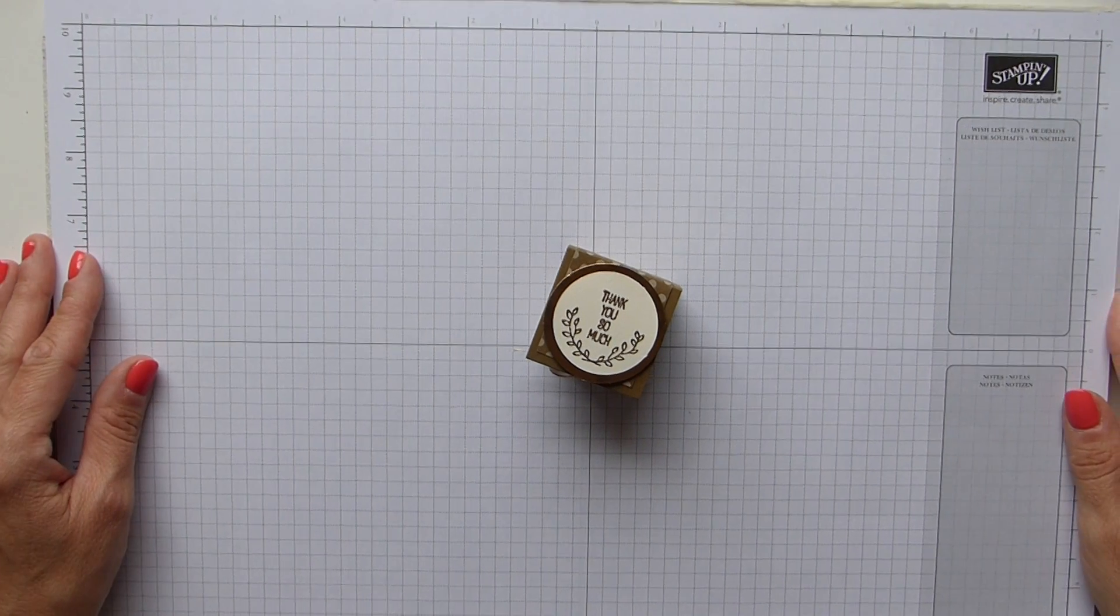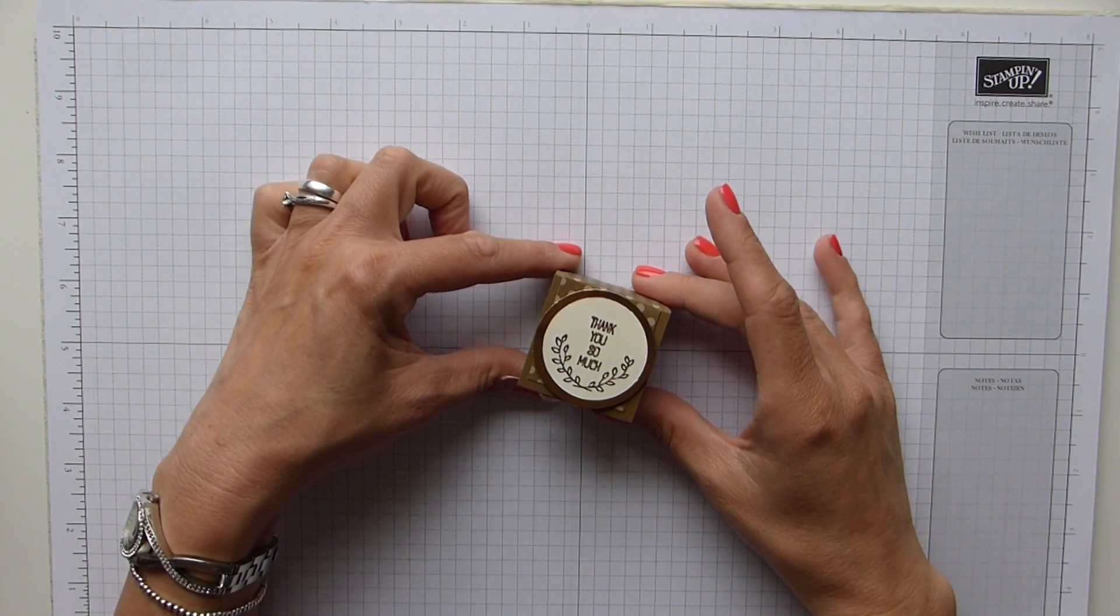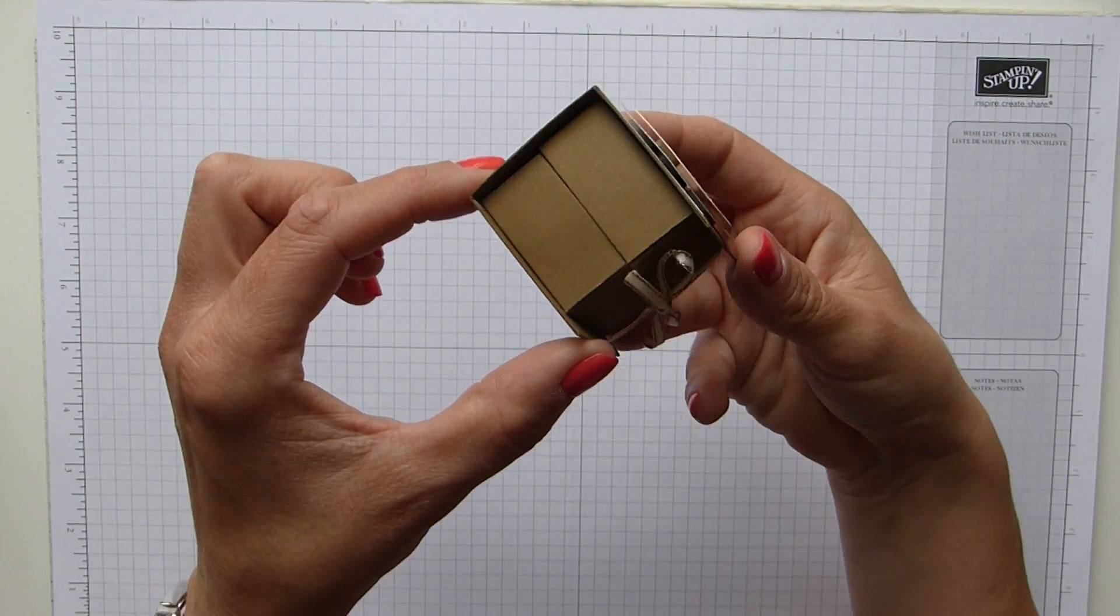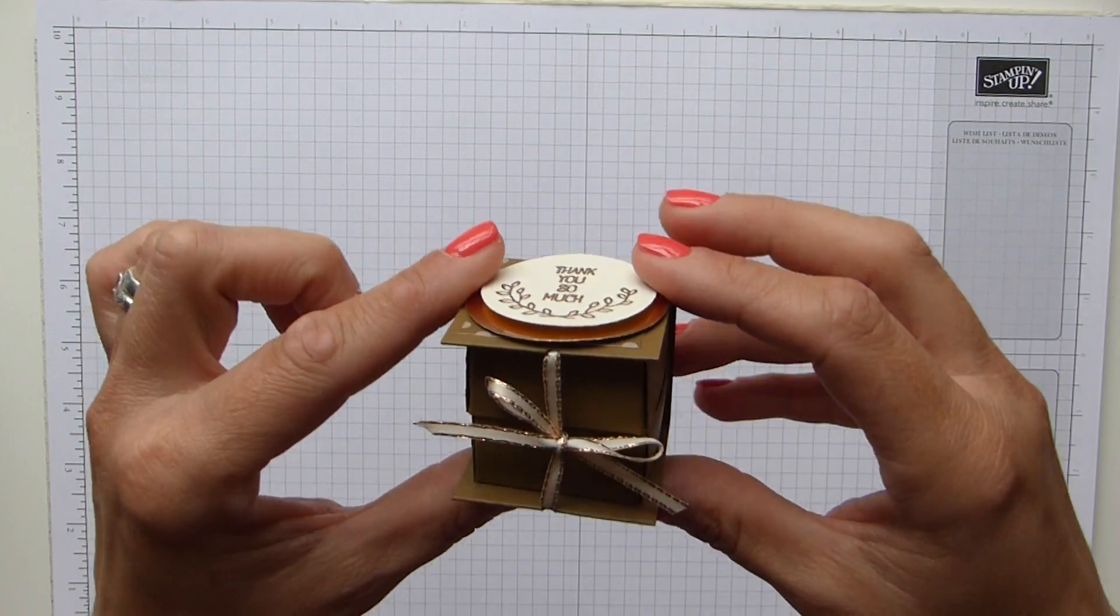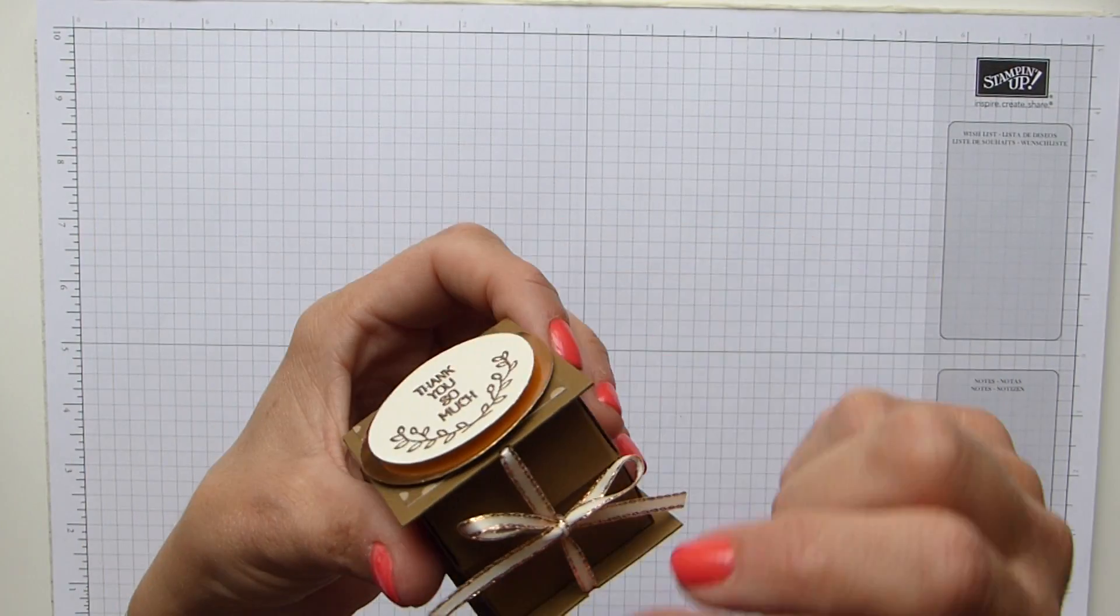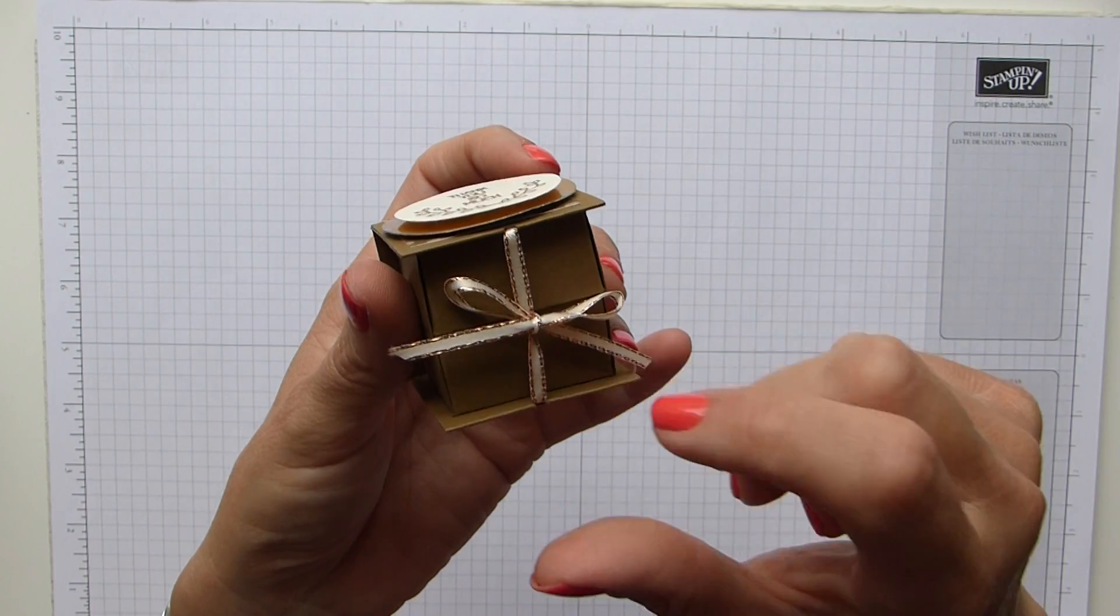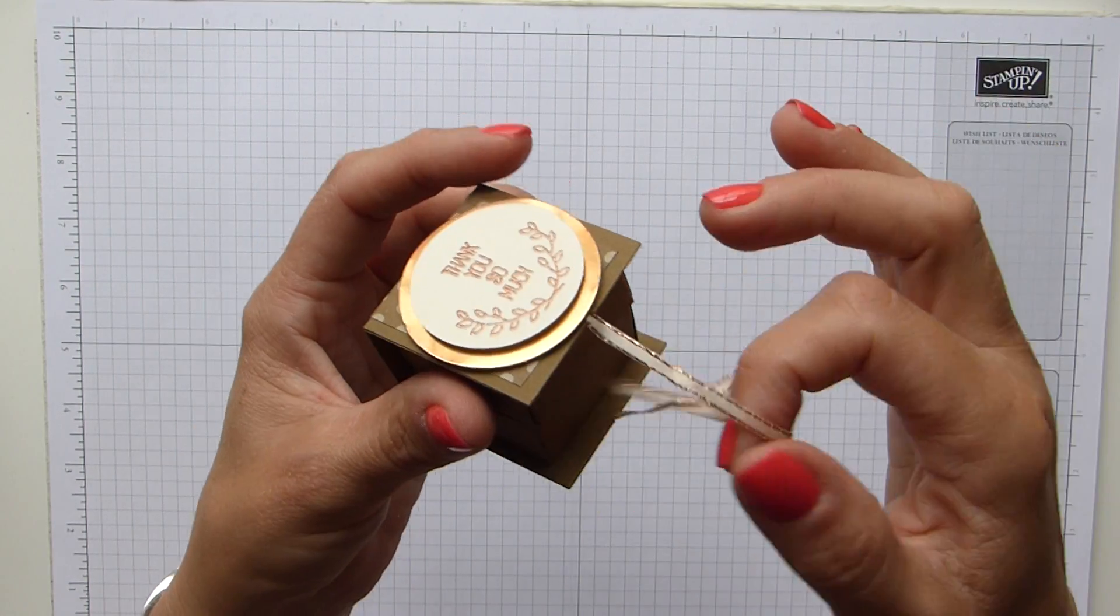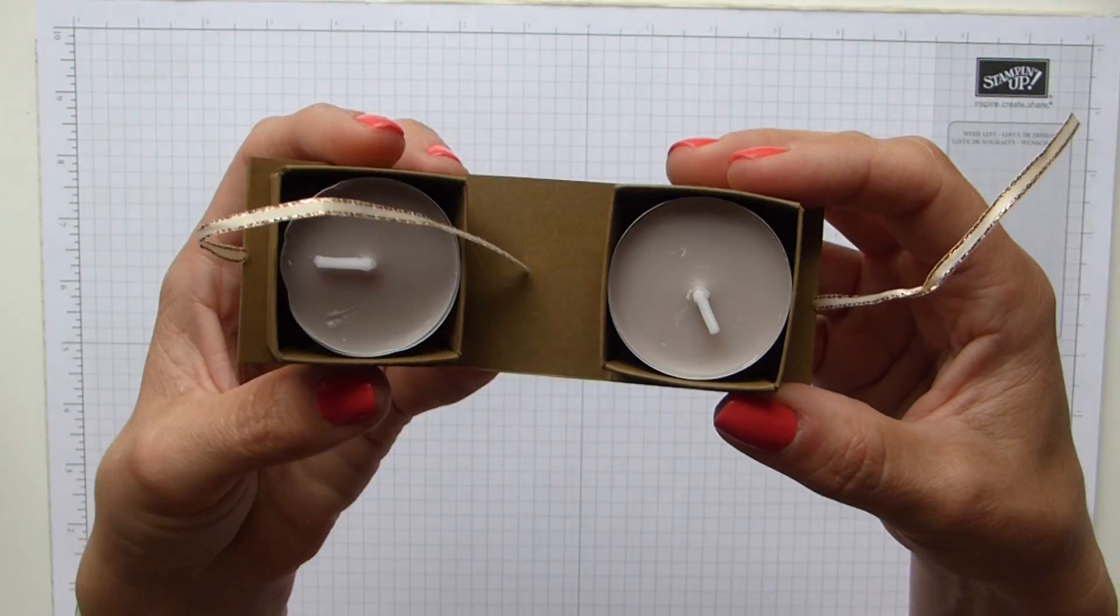Hi everybody, it's Sally from Sally Stampers. Thank you for joining me today. Today I'm bringing you this cute little book fold tea light thank you gift, and I'm not going to undo this bow because it won't go up again, but inside, oh go on I'll show you, inside it has two little tea lights.